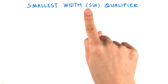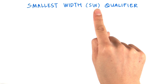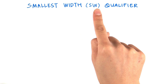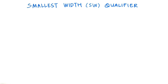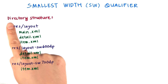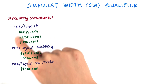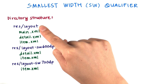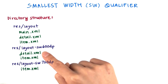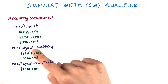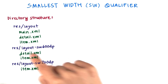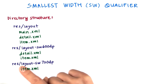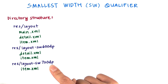We mentioned this several times, but the SW in the resource folder name stands for smallest width. To drive home that point, let's walk through a hypothetical situation. Say you have an app directory structure like this. We have some layouts defined in the base layout folder, and we override some of those in the layout-sw600dp folder. We also override one of these in the layout-sw720dp folder.